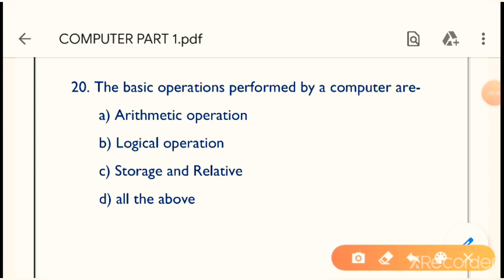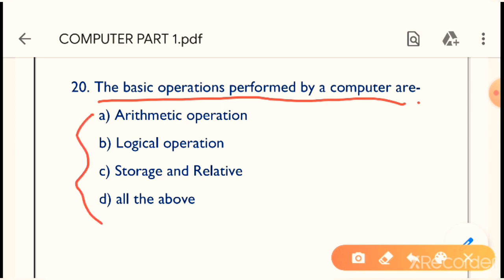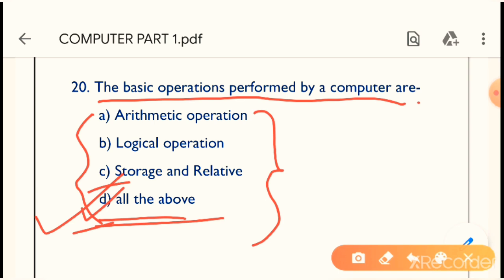Question 20: The basic operations performed by a computer are what? The options include arithmetic operations, logical operations, storage, and relative operations. The correct answer is all of the above. All these operations are performed by a computer.